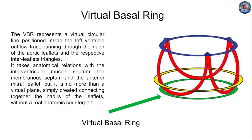The virtual basal ring represents a virtual circular line positioned inside the left ventricular outflow tract, running through the nadir of the aortic leaflet and the respective interleaflet triangles. It takes anatomical connection with the interventricular muscle septum, the membranous septum, and the anterior mitral leaflet, but it is no more than a virtual plane, simply created by connecting together the nadirs of the leaflets without a real anatomical counterpart.